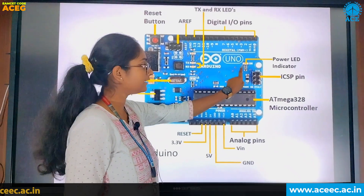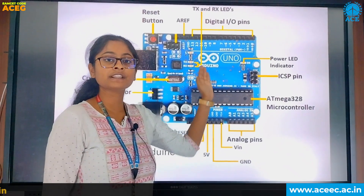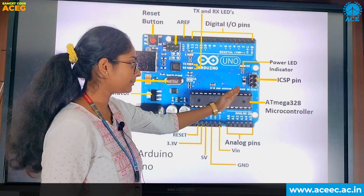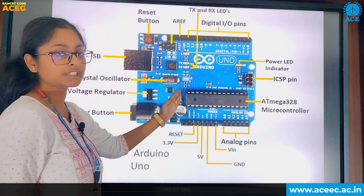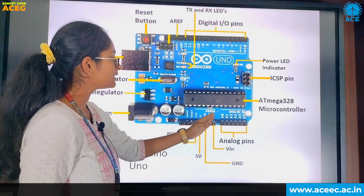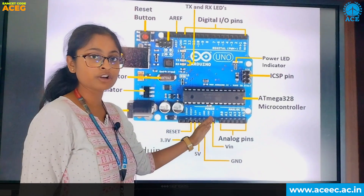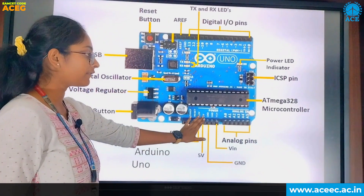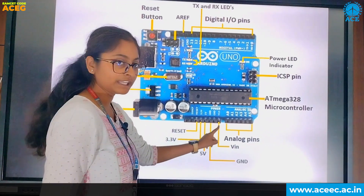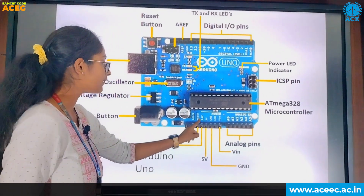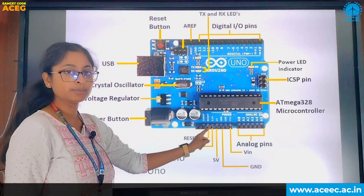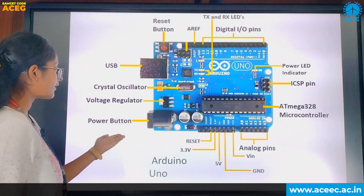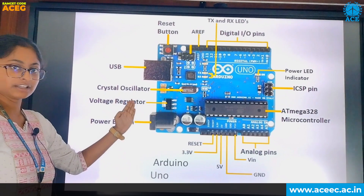This is the power LED indicator which indicates whether it is on or off. These are the ICSP pins and this is the ATmega 328 microcontroller. These are the six analog pins from A0 to A5. These are the power pins: V input, two grounds, 5 volts, 3.3 volts, and reset. This is the power jack and this is the voltage regulator.